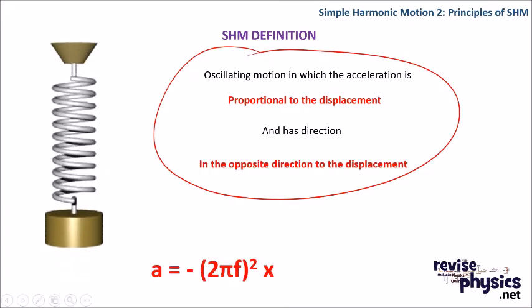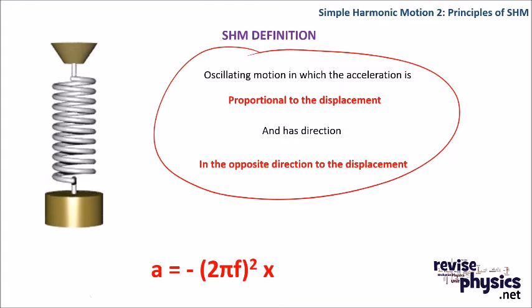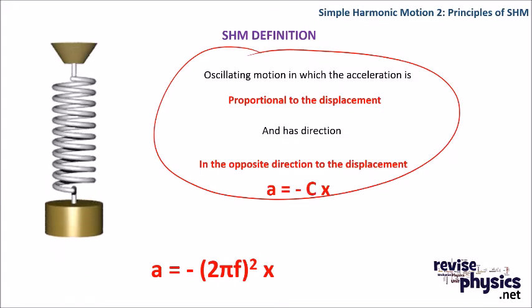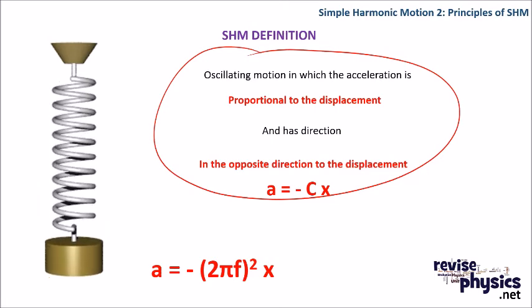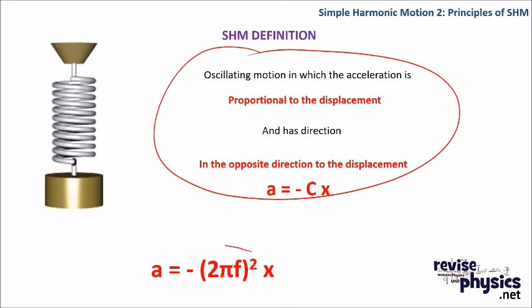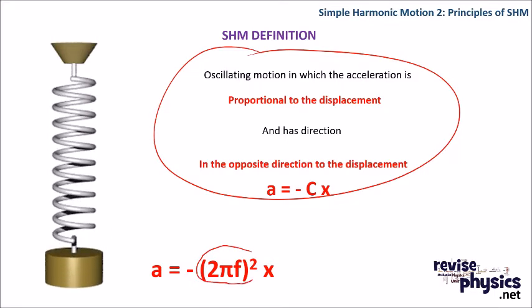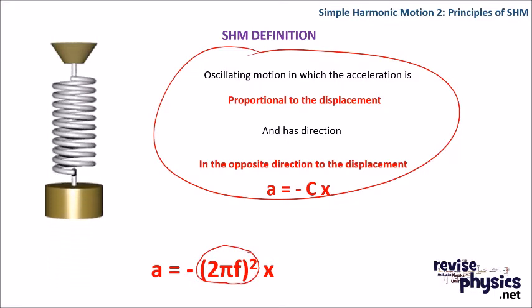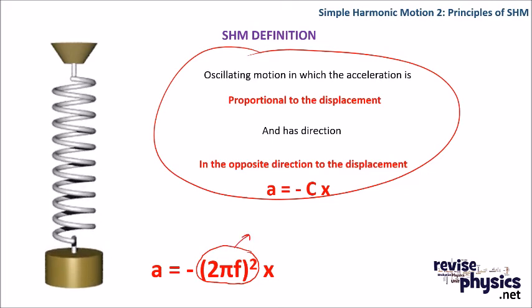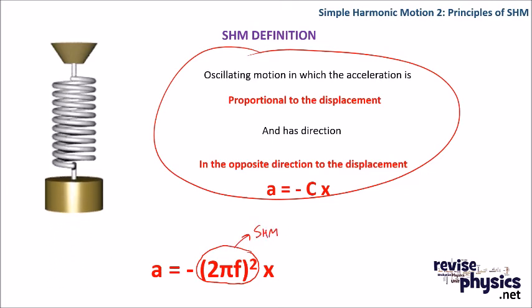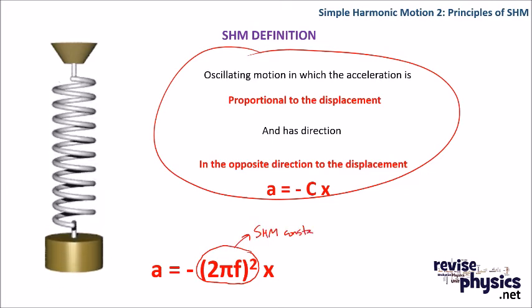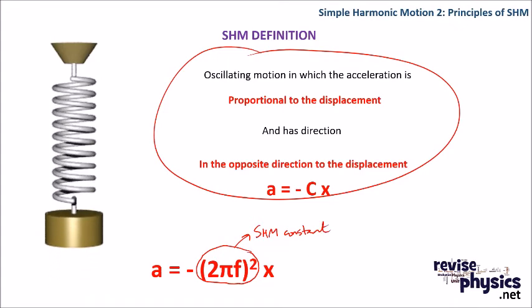As a result, because our acceleration is equal to a constant times the extension, or the displacement, that constant c is minus 2 pi f squared. And we'll see in a later video where that comes from. But we could call that the SHM constant. And it does crop up again and again.